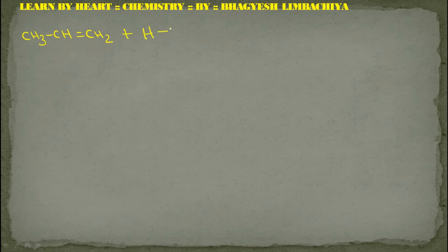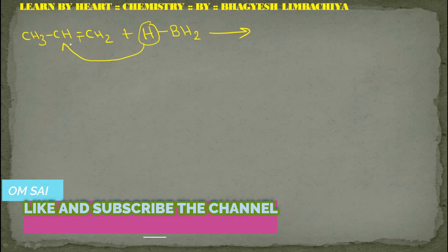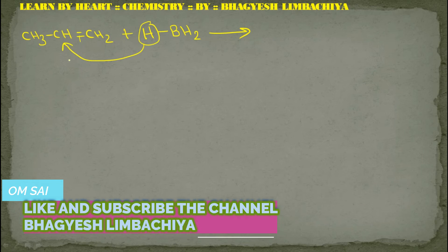So we take propene and the reaction occurs with BH3. The pi bond breaks: H goes to one carbon and BH2 goes to the terminal carbon. Finally we get CH3-CH2-CH2-BH2.